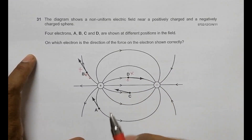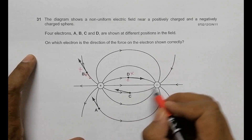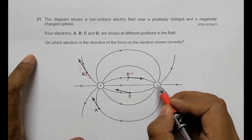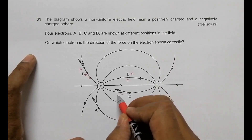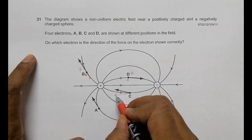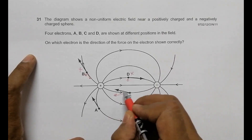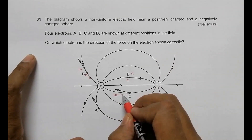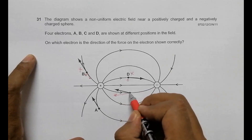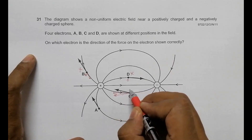For position C, the electron is attracted by the positive sphere - that part is true - but the same electron will also be repelled by the negative sphere. The resultant force should be the vector sum of both these forces, so the direction shown for C is not correct.